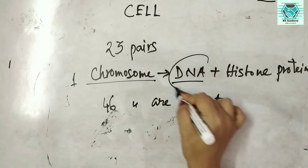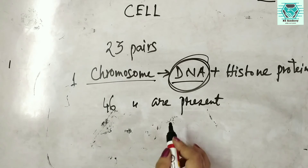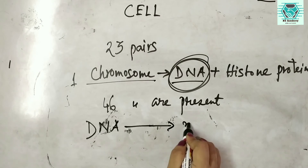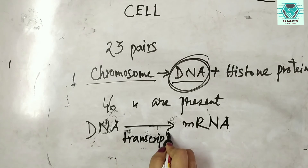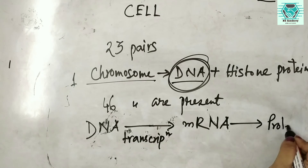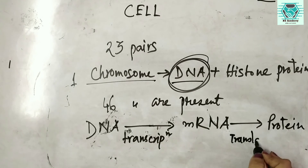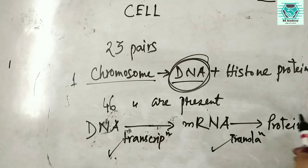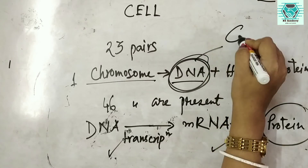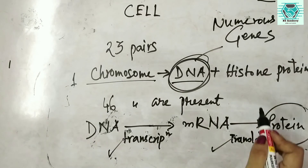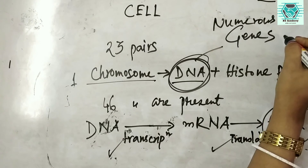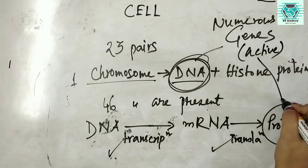DNA is most important because from DNA there is formation of mRNA — the process is called transcription. From mRNA there is formation of protein — the process is called translation. These two processes are very important for protein production. DNA contains numerous genes, and the active genes can produce proteins.